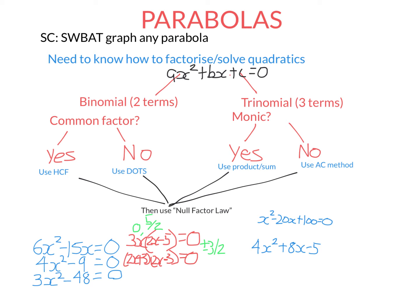Let's try 3x-squared minus 48 equals zero. 3x-squared and 48 both share a common factor of 3, so I write that out the front. What do I times by 3 to get 3x-squared? That's x-squared. What do I times by 3 to get negative 48? That's negative 16.